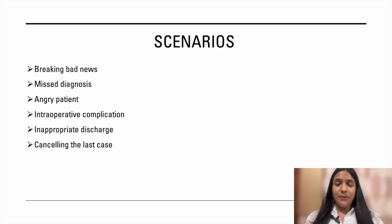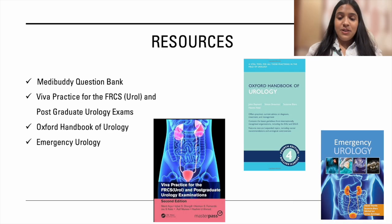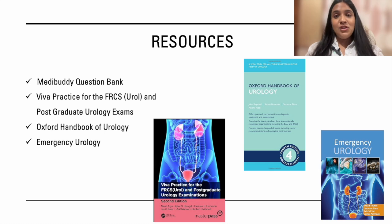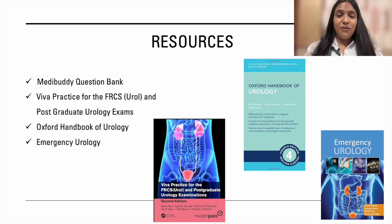The resources I used include the MediBuddy question bank and the FRCS viva practice book — but don't waste too much time memorizing studies or clinical trials, that's not what they're looking for at ST3 level. I also used the Oxford Handbook of Urology and the Emergency Urology book. I'll put links to all of these in the description box below.